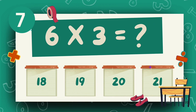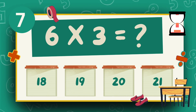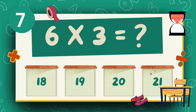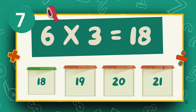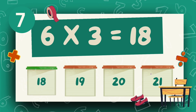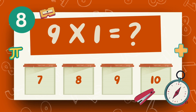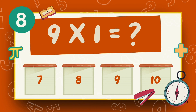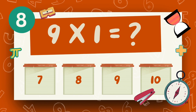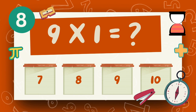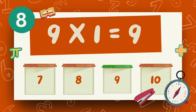What is 6 multiply 3? The answer is 18. What is 9 multiply 1? The answer is 9.